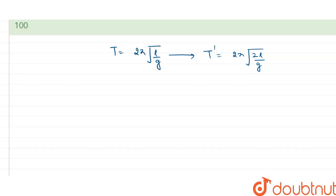So the percentage change is given by delta T, that can be written as final minus initial upon initial into 100. This is the percentage change.